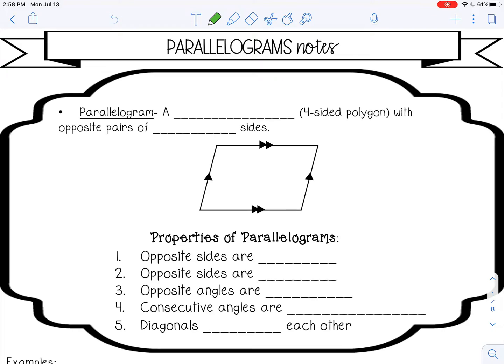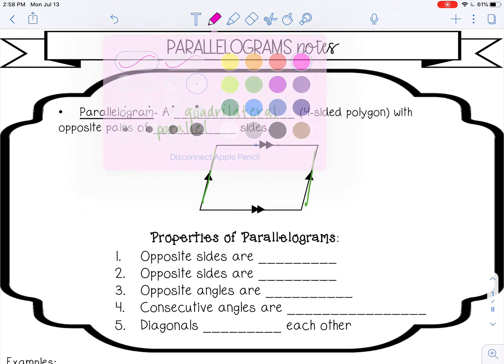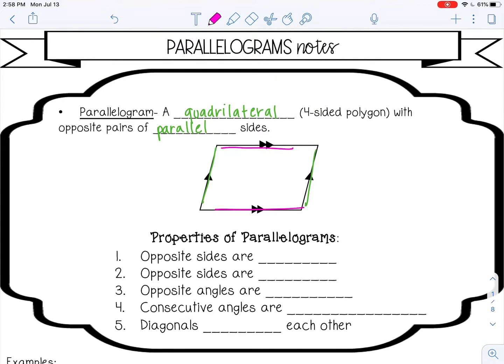Welcome to this lesson on parallelograms. A parallelogram is a quadrilateral, which means a four-sided polygon, with opposite pairs of parallel sides. So these two sides are parallel, and these two sides are parallel.